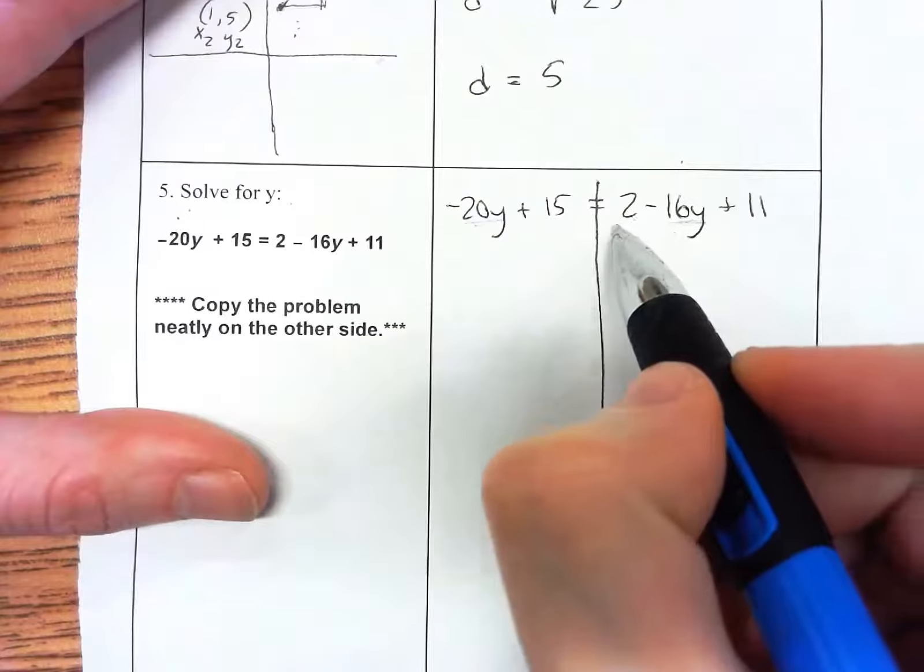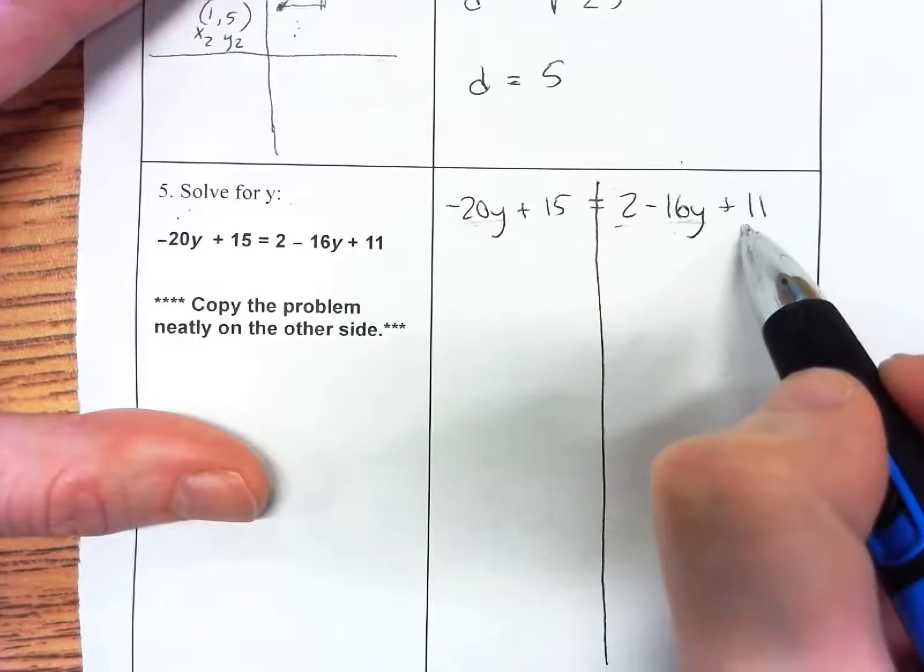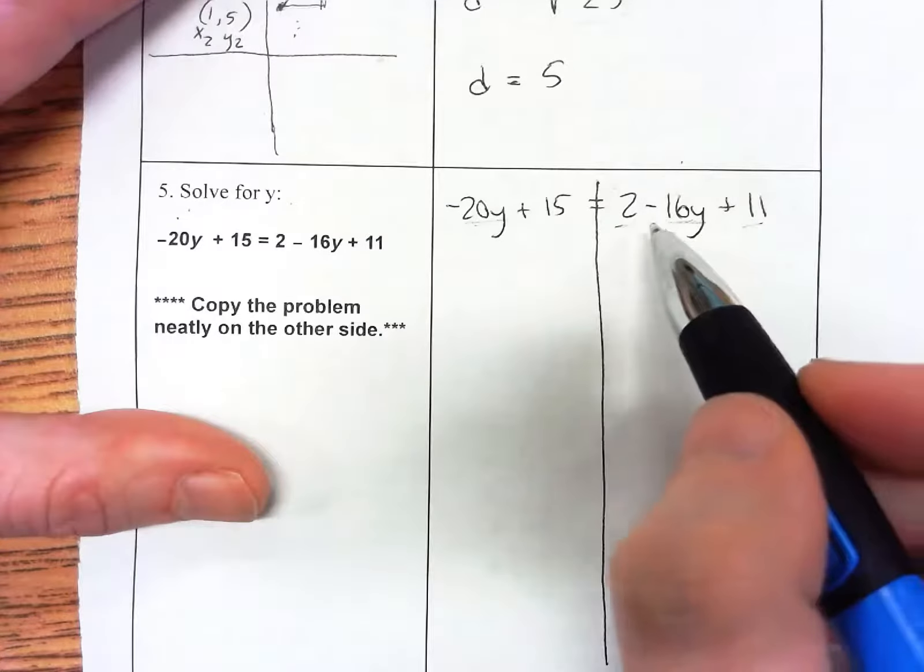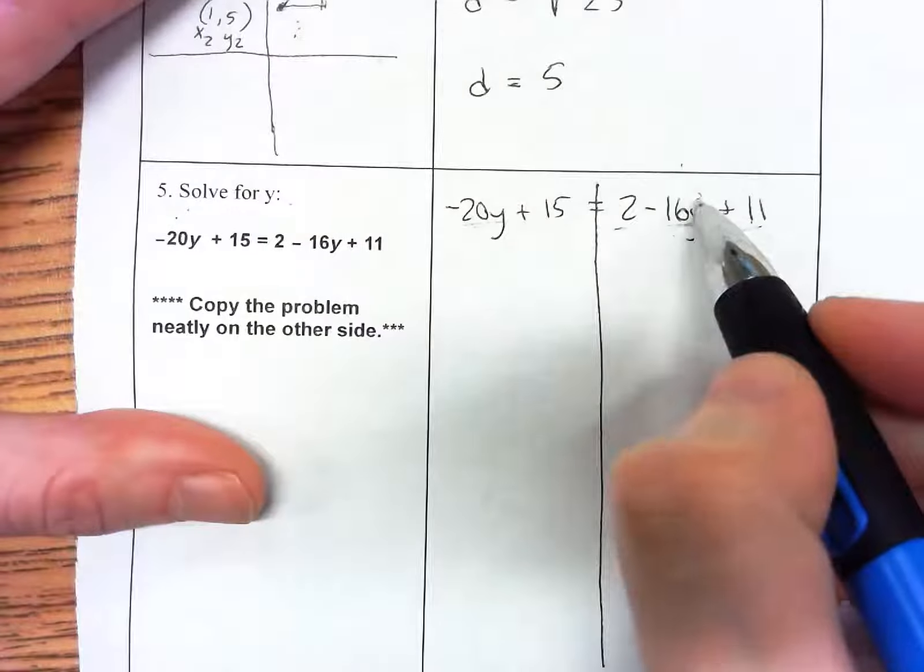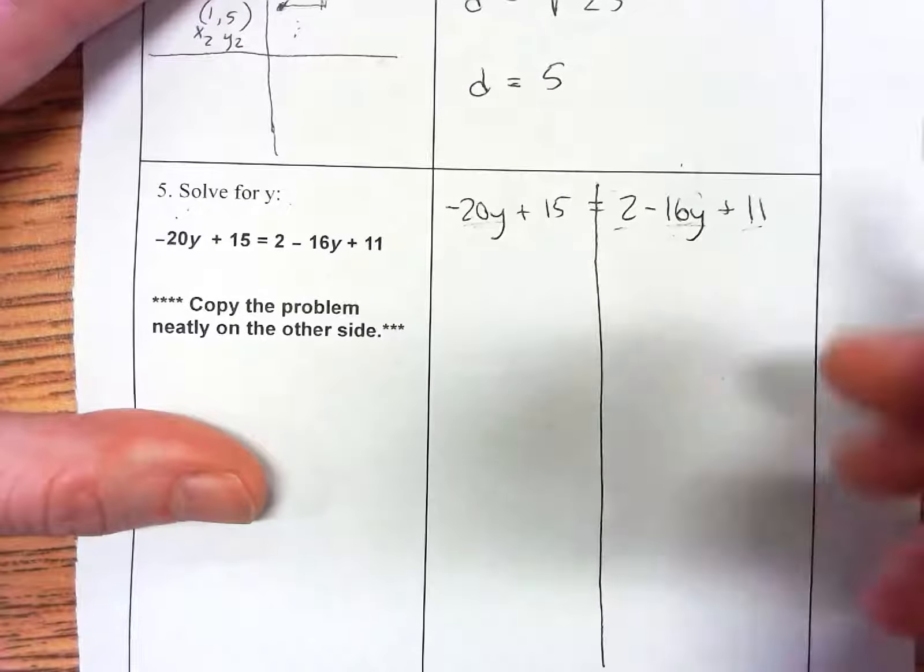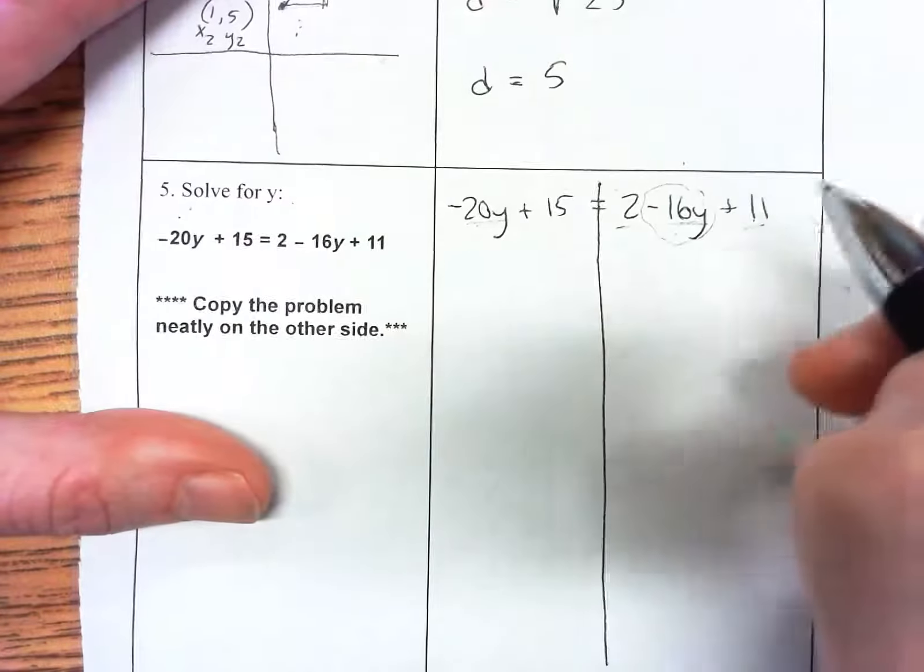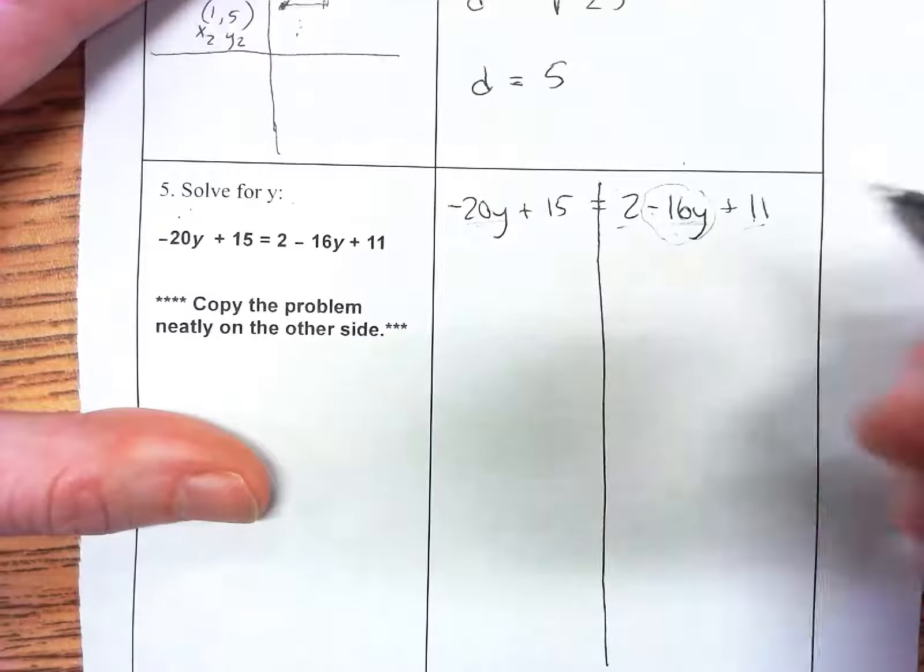Also over here I have this 2 and then this 11, so those need to be combined as well. Let's first start by moving the y over to this side. You could actually move it to whichever side you wanted. I'm going to move this one first. This is minus 16y.